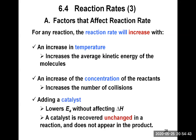Adding a catalyst also increases the reaction rate. A catalyst is something added to a reaction but is not part of the reaction and will not be a product — it does not appear in the chemical equation. It is usually shown above the arrow and remains unchanged before and after. The role of the catalyst is to lower the activation energy without affecting the heat of reaction, giving more molecules the chance to reach the transition state and become products.